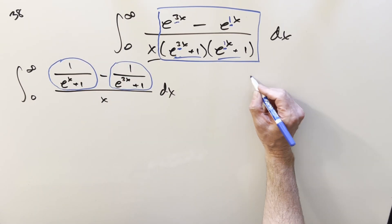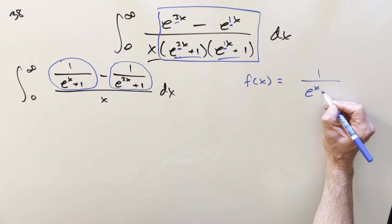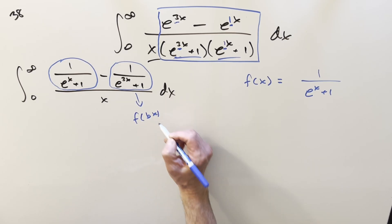So just to be really clear about it, we're saying our f of x value is going to be just this, 1 over (e to the x plus 1). But here, this will be the f of bx, where b equals 3. So you input 3x into this function and you get this.